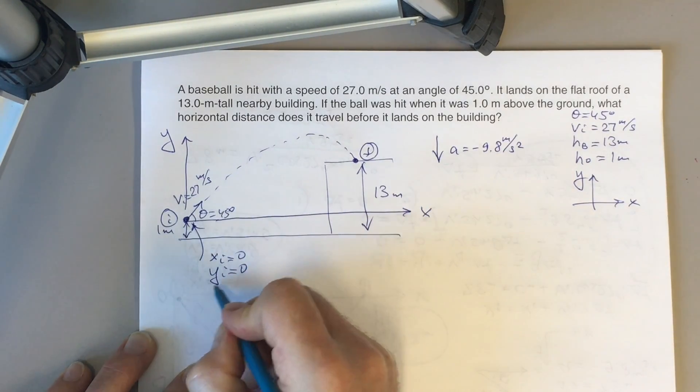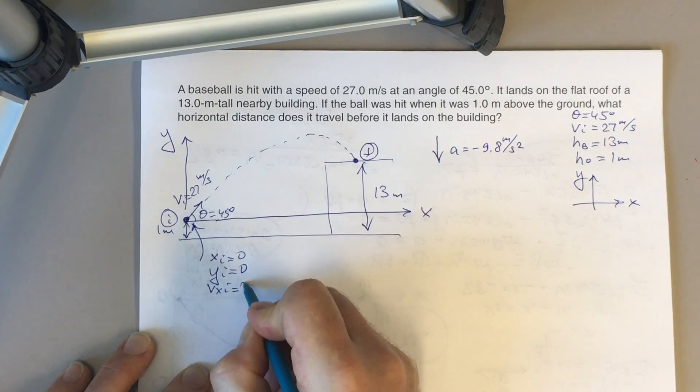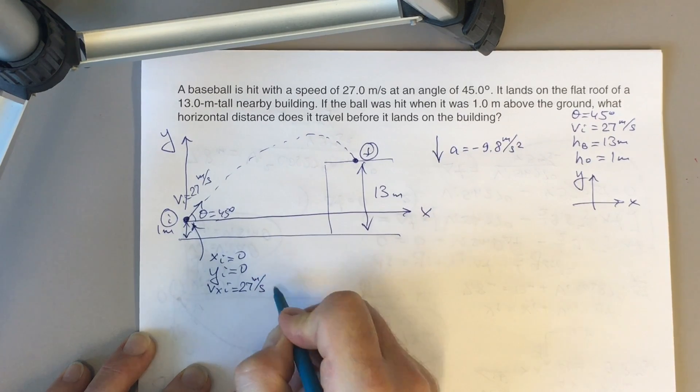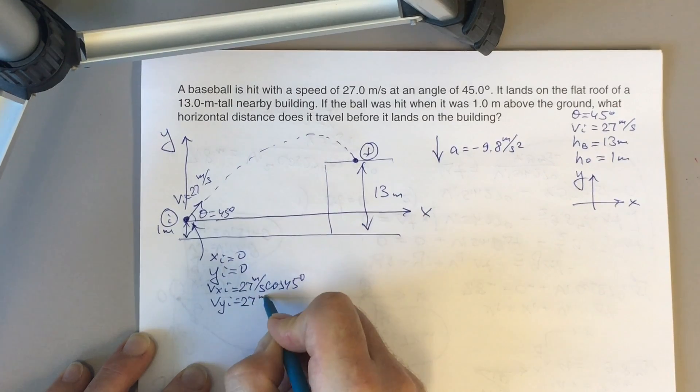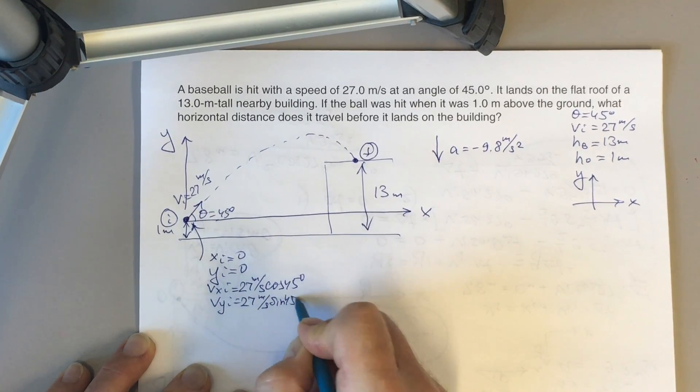We know that vx-initial is 27 meters per second times cosine 45 degrees, and vy-initial is 27 meters per second times sine 45 degrees.